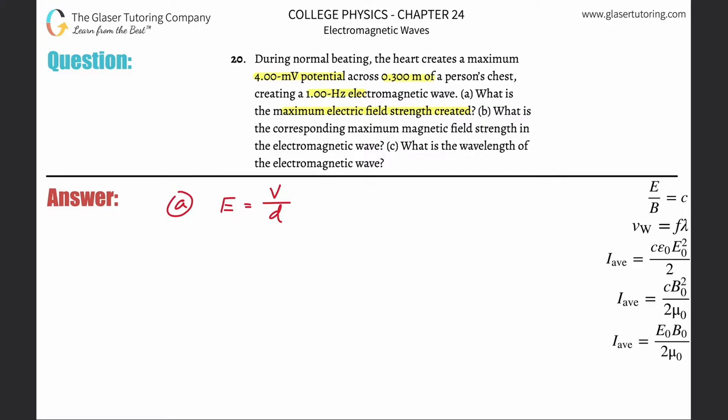We're trying to find the electric field, so the voltage they told us is four millivolts, which is four times ten to the minus three volts, and the distance is 0.3 meters. So we plug that in: four times ten to the minus three divided by 0.3, and that's 1.33 times ten to the minus two volts per meter. Those are the units for electric field.